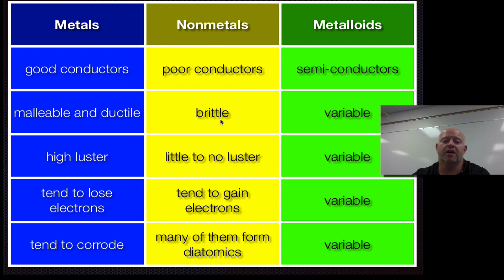Non-metals tend to not be very malleable. So think of like sulfur. Sulfur is a non-metal or phosphorus is a non-metal or iodine. They're all non-metals. They tend to be really brittle. They break and they crack and that kind of stuff if you were to hit them with a hammer. Whereas metals, if you hit them with a hammer, they tend to dent. So they tend to be more malleable and ductile.